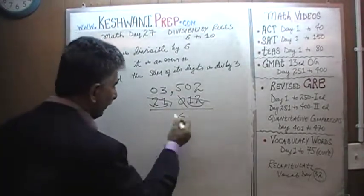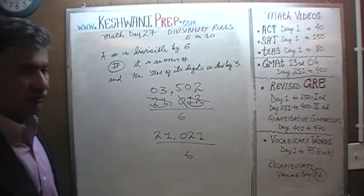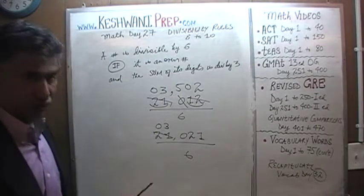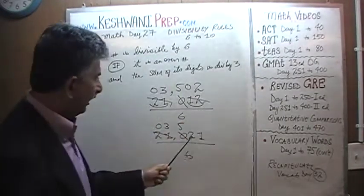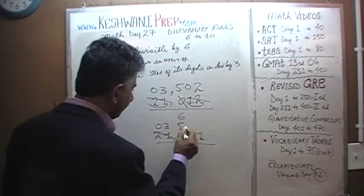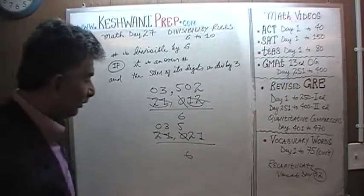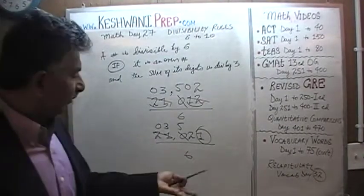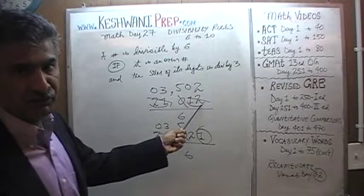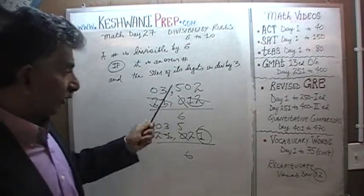Now instead of 21,012, if we had 21,021 — wait, there's a problem. This number ends in a 1, so it's an odd number. This number is no longer divisible by 6. The previous one was divisible because it was even. If it's even, it tells us it's divisible by 2, and the sum of the digits was divisible by 3, so it's also divisible by 6. But 21,021 is not — it fails the even number test.